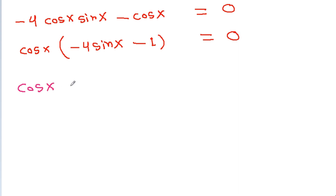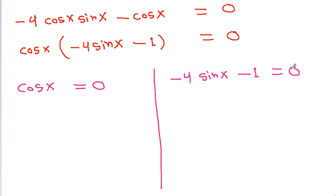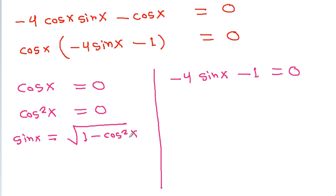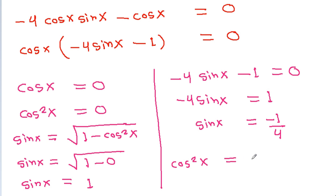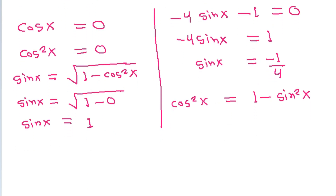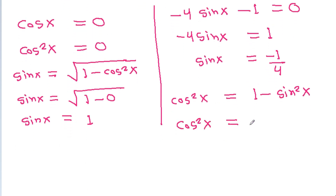So either cosx = 0 or -4sinx - 1 = 0. If cosx = 0, then sin²x = 1 - cos²x = 1, so sinx = 1. From -4sinx - 1 = 0, we get sinx = -1/4, and cos²x = 1 - sin²x = 1 - 1/16 = 15/16.